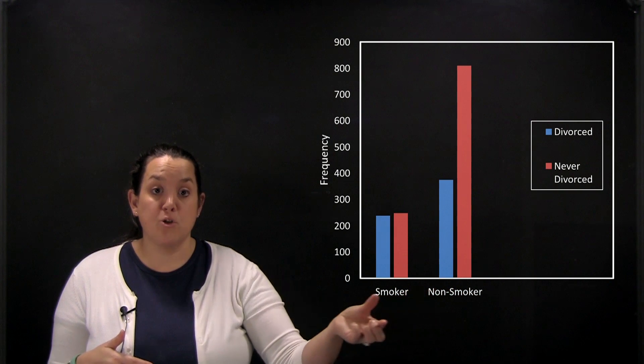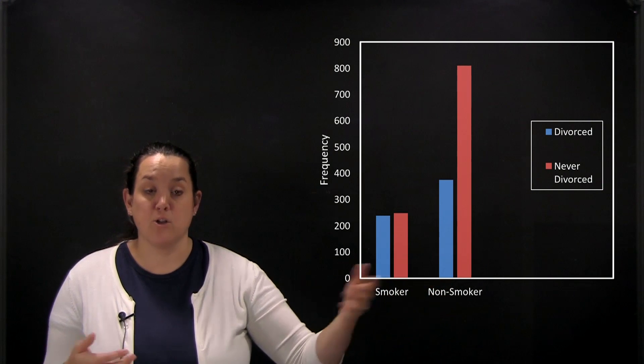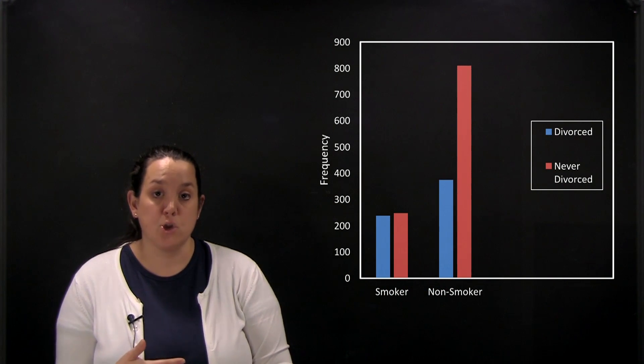Whereas on a histogram, the bars do touch because your x-axis is a number line or it's continuous, which is why the bars would actually touch because it makes sense for one to touch two, for example.